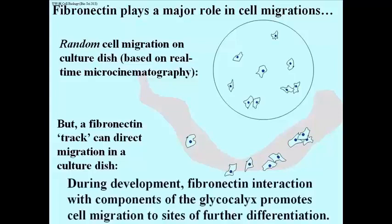This is useful because during development, an extracellular matrix forms along sheets of tissue, and newly differentiated cells can move along this track from wherever they originated to where they have to be before they can differentiate any further. This is very important during the formation of an embryo and the development of fetal tissues and so on.